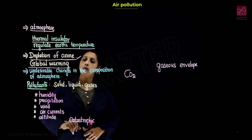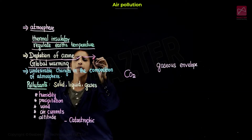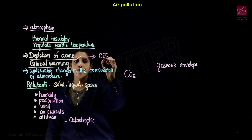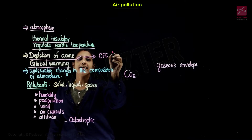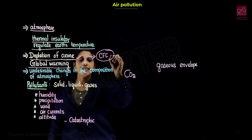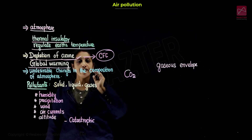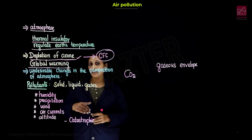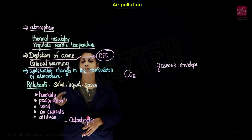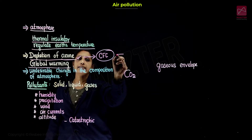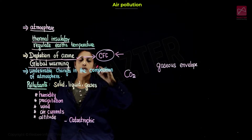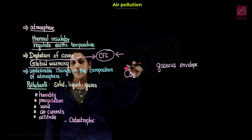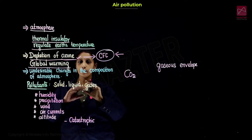If you look at ozone depletion, the most important gas is chlorofluorocarbon. Where is it found? It is used as a refrigerant — in the fridge, it is called the refrigerator coolant, and it is also used in air conditioners. This gas can leak and go into the atmosphere, where it mixes with the air.